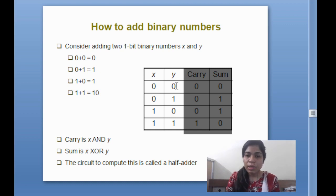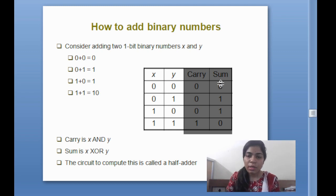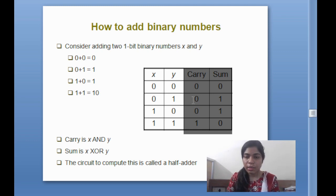Suppose zero plus zero: carry will be zero, sum will be zero. After adding any zero number, we know the result. If I add zero plus one, carry will be zero and sum will be one.